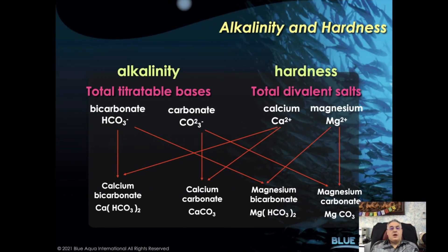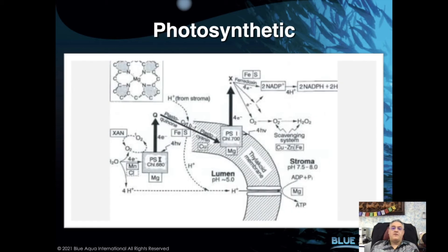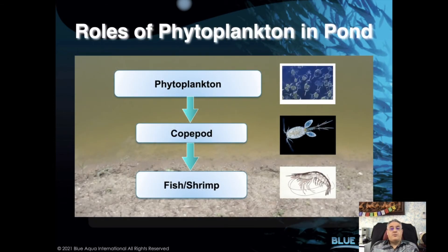Alkalinity is often misunderstood — it has no direct impact on shrimp growth but is more about buffering capacity and nitrification. Hardness, on the other hand, impacts shrimp significantly because calcium and magnesium can be utilized directly by shrimp and also by phytoplankton. In the photosynthesis process, many minerals are involved — magnesium is the center of the chlorophyll molecule, and other minerals are also very important in the process of photosynthesis.